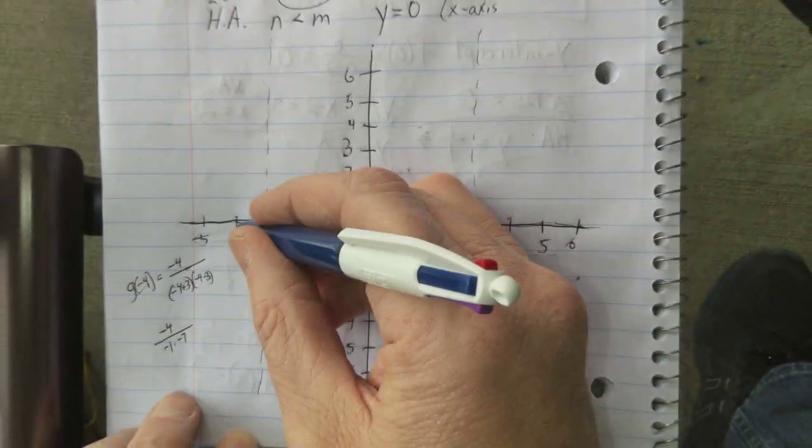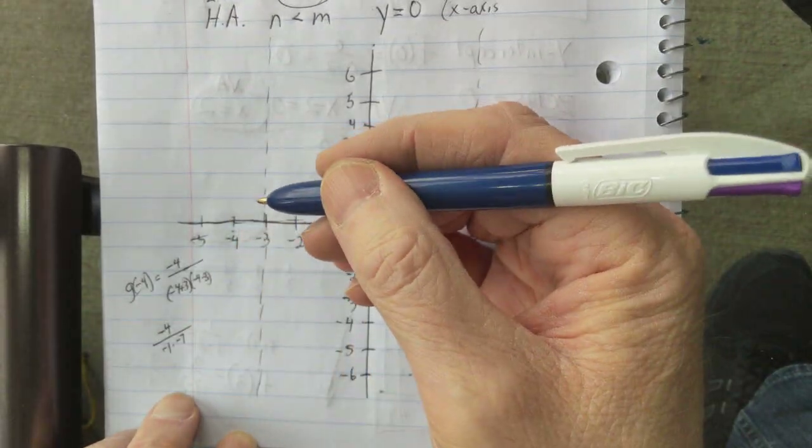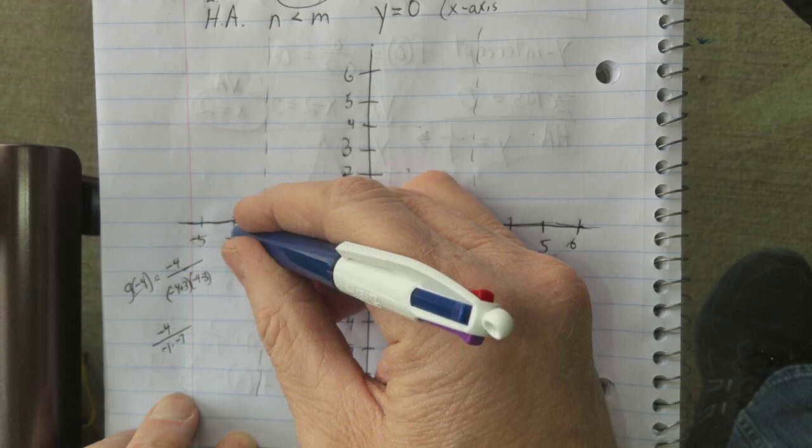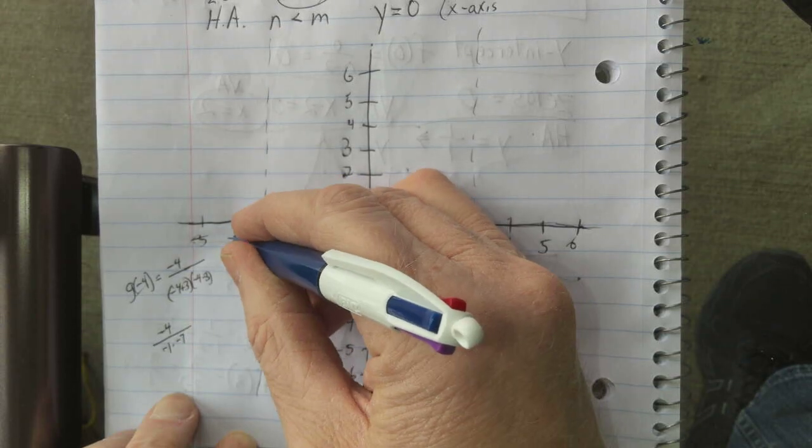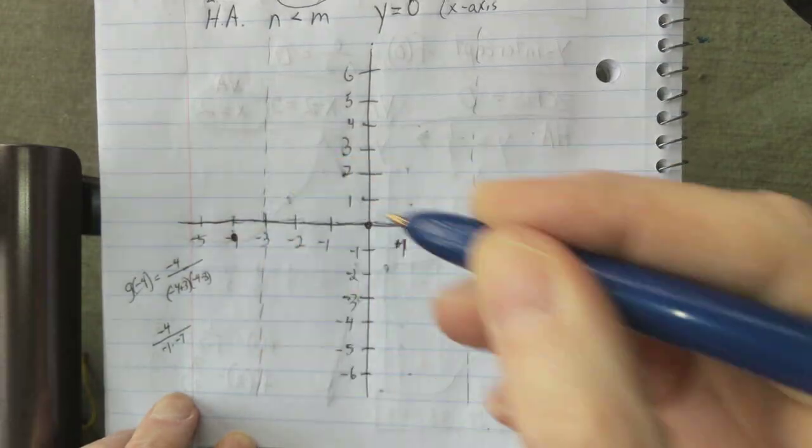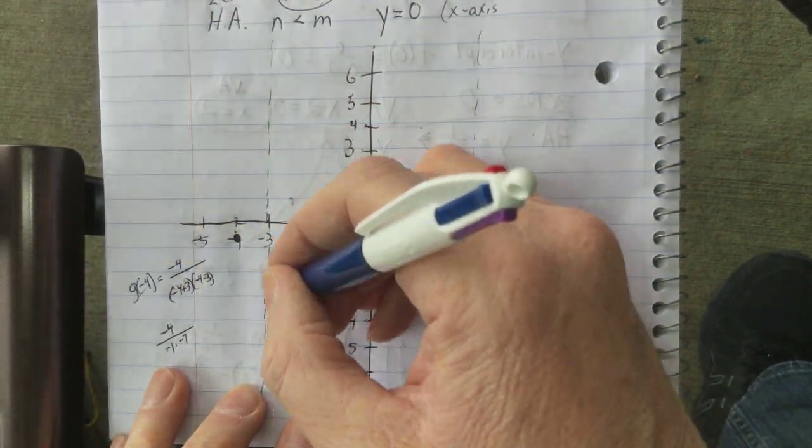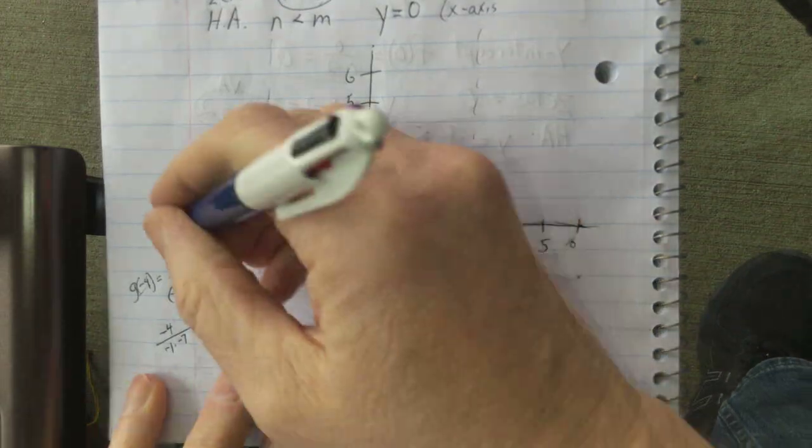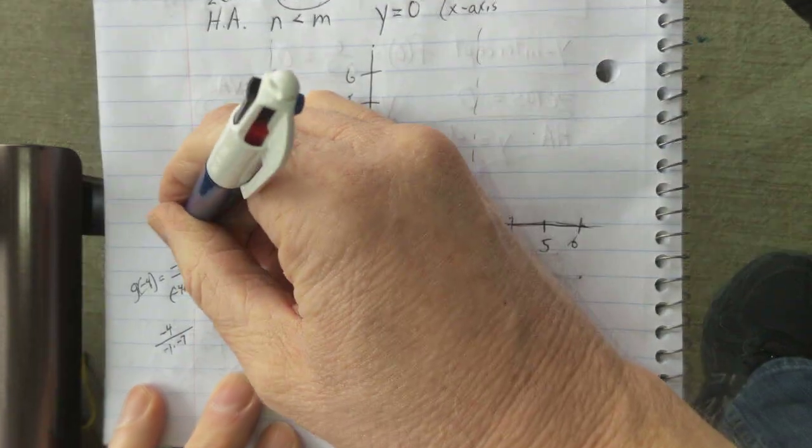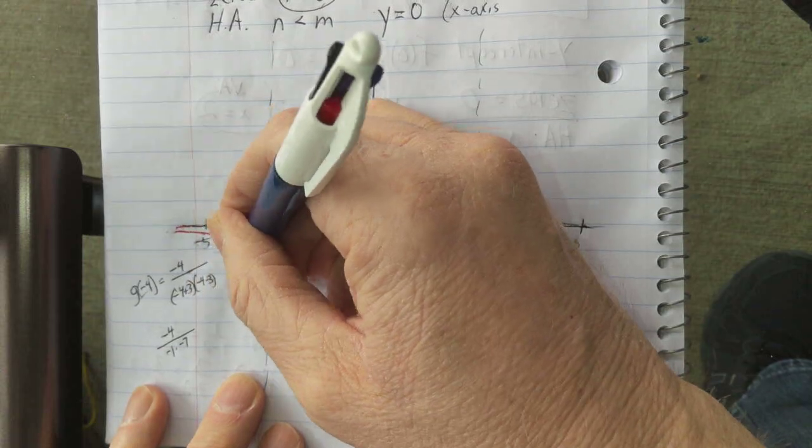So, negative 4... Negative 4 sevenths. Here's half. It's a little more than half. So it's right around there. There's a point right around there. That is enough to tell me we got this asymptote and this asymptote that it's down here. I'm going to go with a different color here. So that curve kind of happens right here.